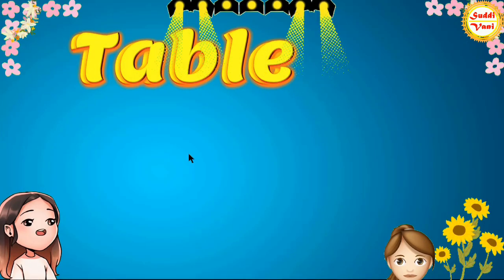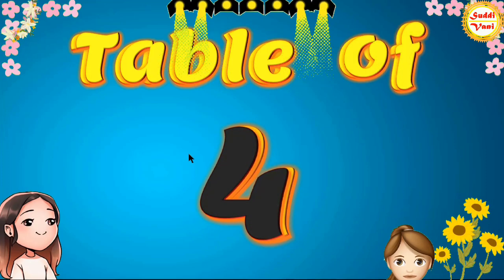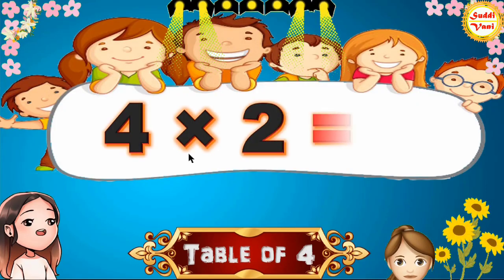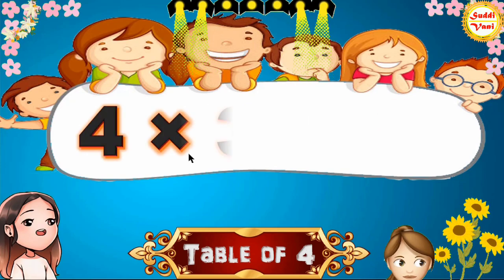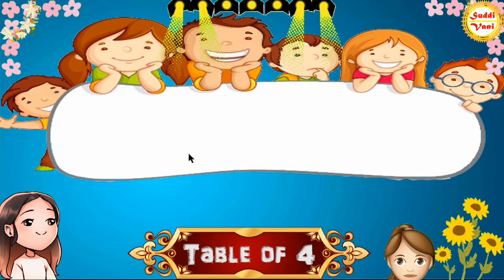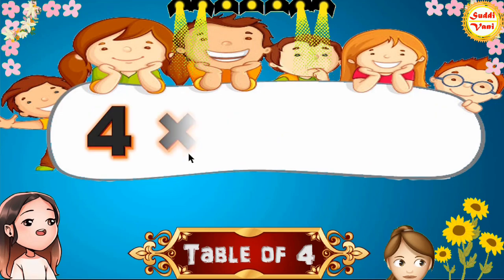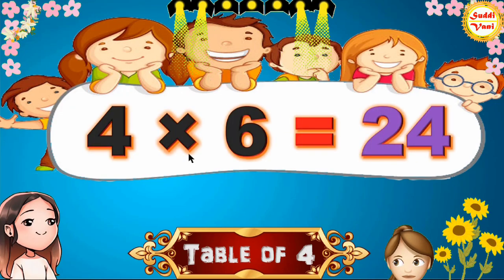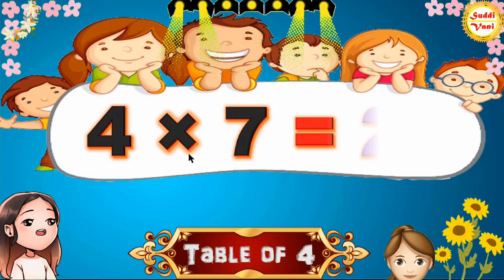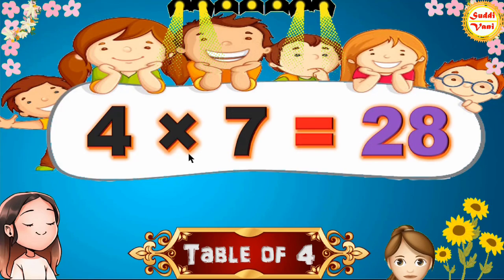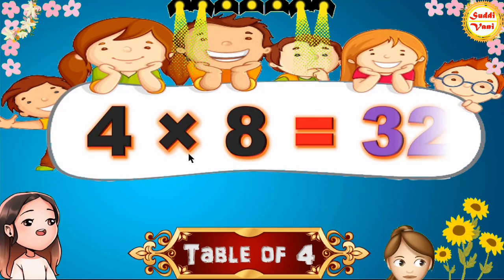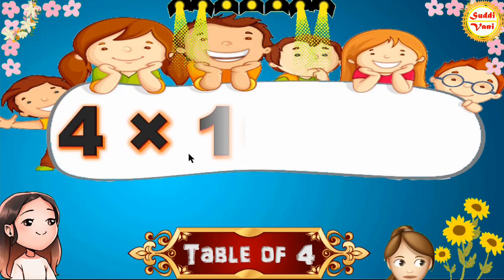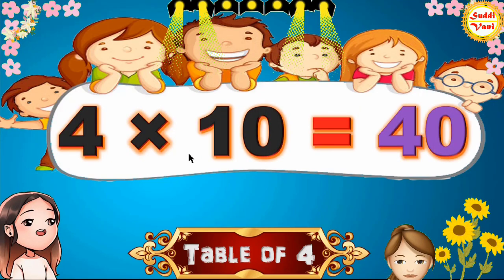Hello children, we will learn table of 4. 4×1=4, 4×2=8, 4×3=12, 4×4=16, 4×5=20, 4×6=24, 4×7=28, 4×8=32, 4×9=36, 4×10=40.